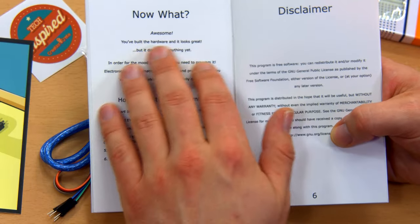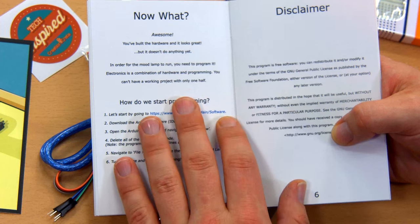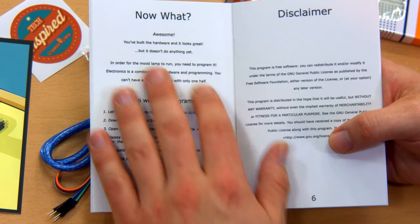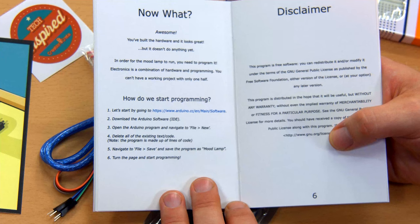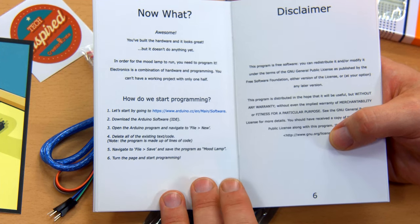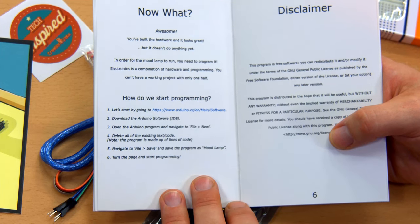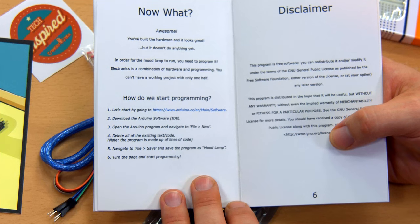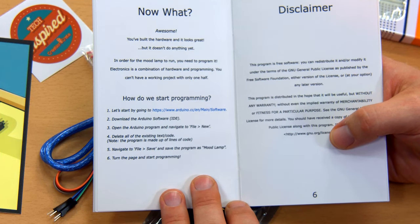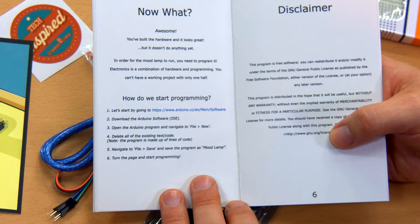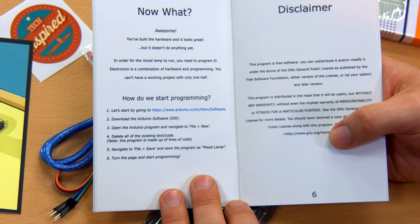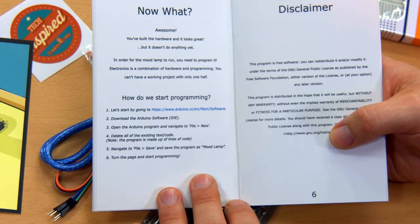Now what? In order for the mood lamp to run, you need to program it. Electronics is a combination of hardware and programming. You can't have a working project with only half. Now, I don't want to get all nitpicky here, but that's a bit of a misnomer. Electronics projects do not necessarily involve programming. A similar mood light could be made with discrete components. But at any rate, I enjoy the positive, encouraging tone of the manual.